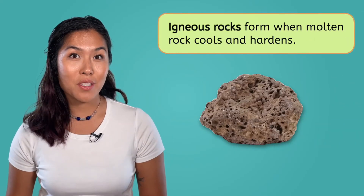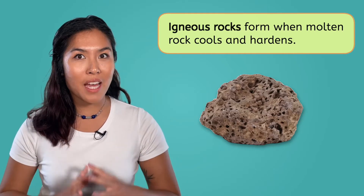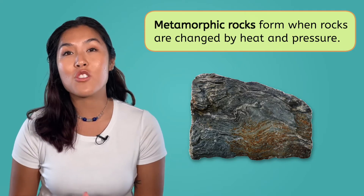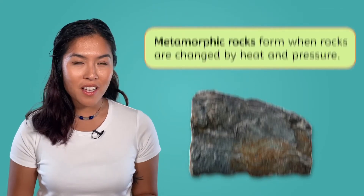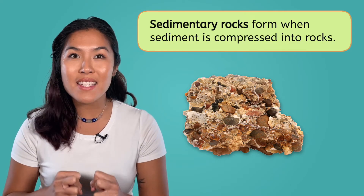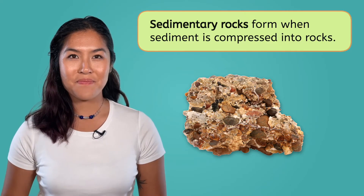In our last lesson, we learned about the three different types of rocks: igneous rocks, which are formed when molten rock cools and hardens; metamorphic rocks, which are formed when rocks are changed by heat and pressure; and sedimentary rocks, which are formed when sediment is compressed into rocks. These rocks are all formed when something changes, whether that's magma cooling down, or an existing rock transforming.